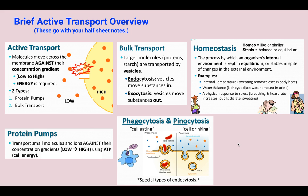Exocytosis would be exiting — that's getting rid of a substance, like a waste product. Next, we're going to talk about homeostasis. In the very first video, we touched on this. Homeostasis is when we have a natural internal and external balance happening — a process by which an organism's internal environment is kept in equilibrium, stable in spite of changes in the external environment.